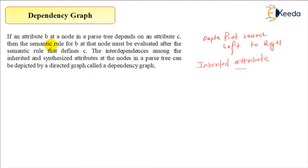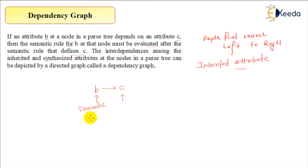To understand that, we need to understand the dependency graph and see how it is evaluated. If an attribute B at a node in a parse tree depends on attribute C, then the semantic rule for B must be evaluated after the semantic attribute of C. So B is dependent on C — you evaluate C first, then go to B.